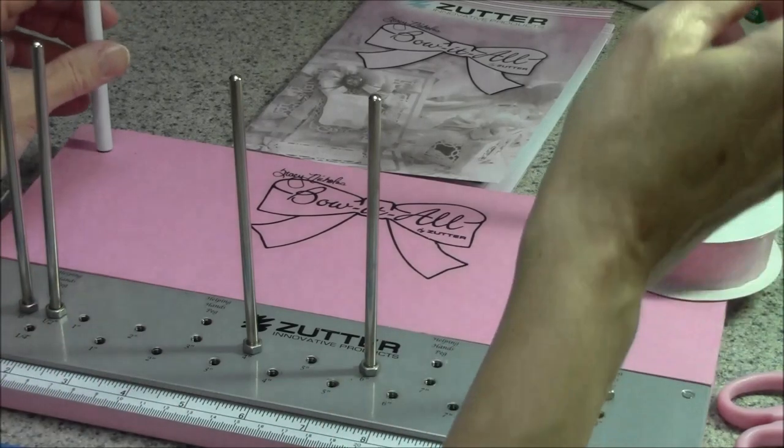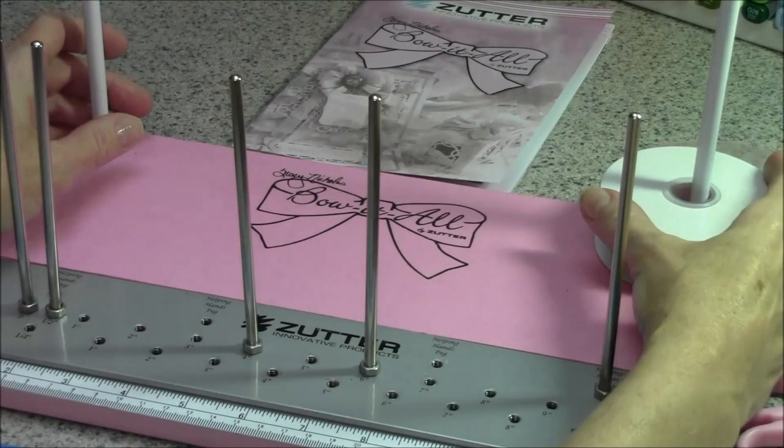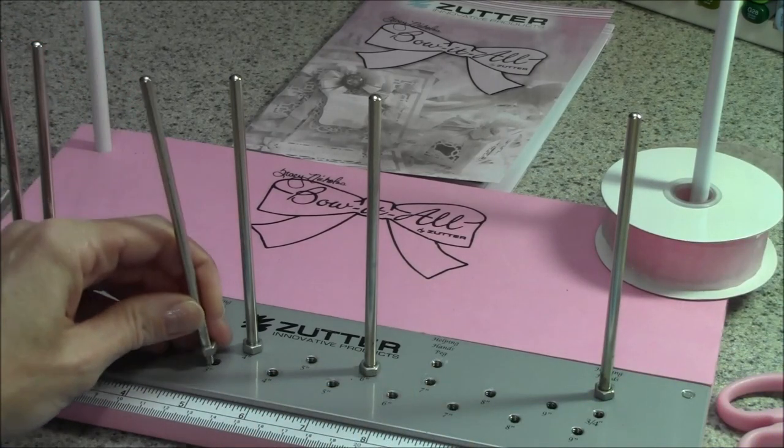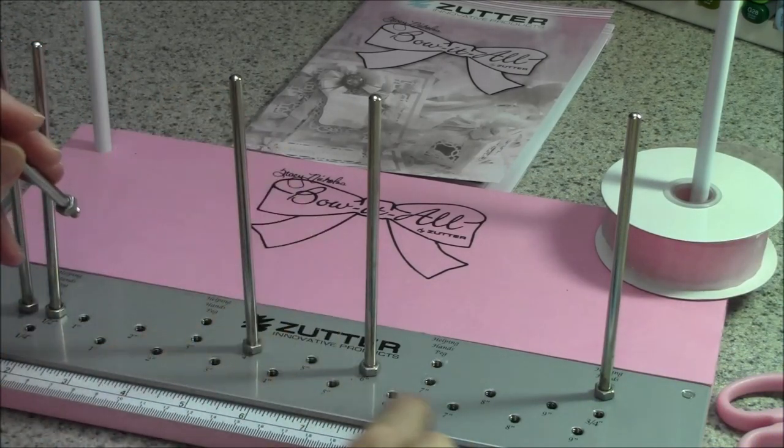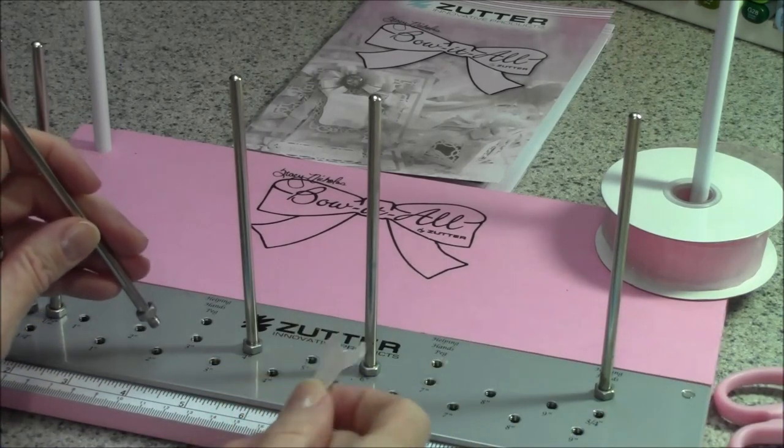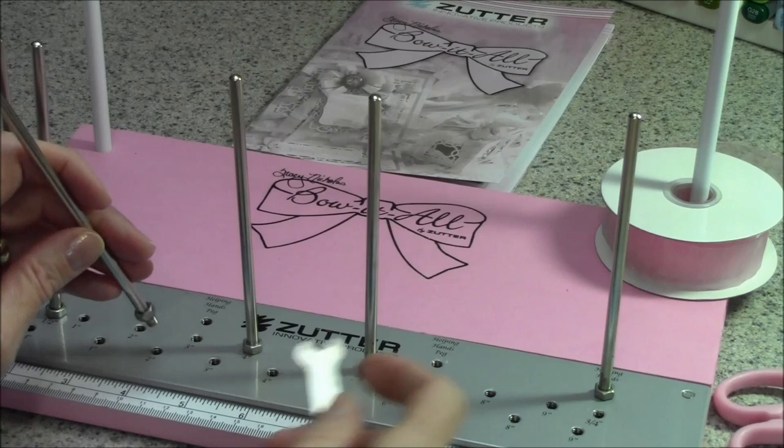The tool comes with spool pegs in the back to hold any spooled ribbon that you might be using for your bows and it also has six pegs which screw into the measured numbered holes and lock in place with the wrench that comes with the tool.